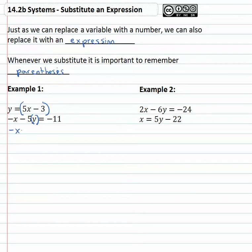So when we do that, we get -x - 5y, which is now 5x - 3, equals -11. Notice the importance of the parentheses that I put in there as we solve, as we substitute.